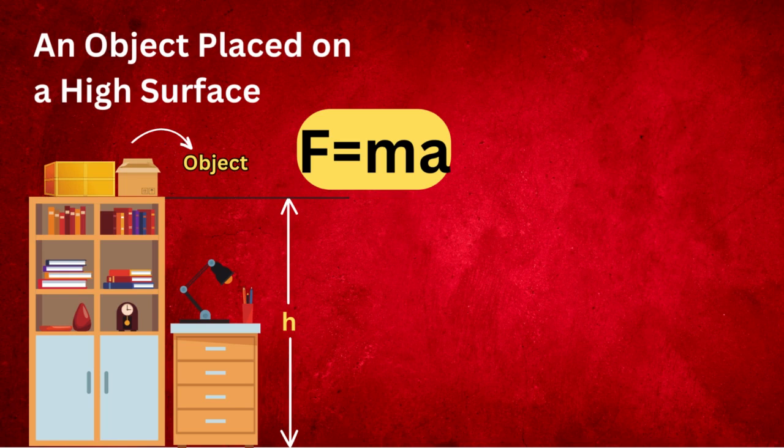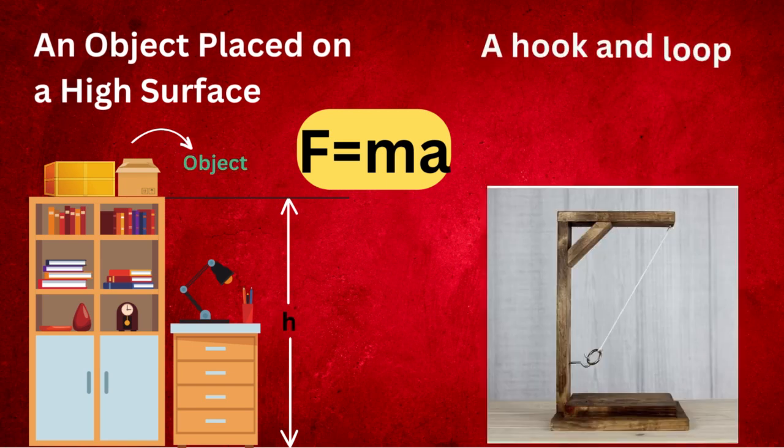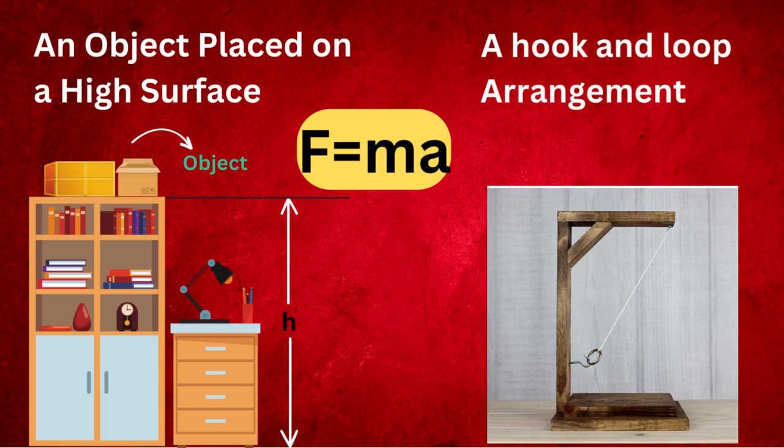Therefore, the forces acting on such an object only contribute to preserve the state of rest of the object. A hook and loop arrangement: A hook suspended in a loop does not fall or get displaced from its position. This is because a force acting in between two objects forbids any type of change in the position or the location.